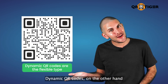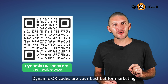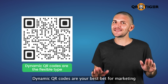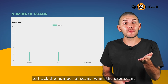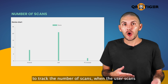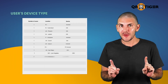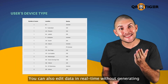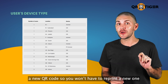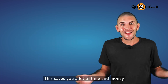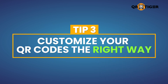Dynamic QR codes, on the other hand, are the flexible type and your best bet for marketing. You can set up a QR code tracking system to track the number of scans, the user's location, and their device type. You can also edit data in real time without generating a new QR code, so you won't have to reprint a new one — saving you time and money.